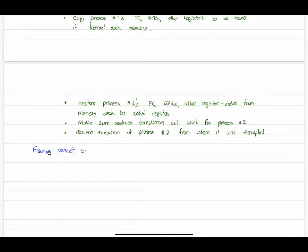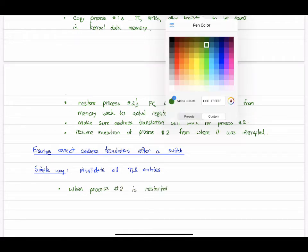Now a little bit more about ensuring address translation works and setup for process number two. As we mentioned, there's a couple ways. Let's look at a simple way first. The idea here is simply to zero out or invalidate all the TLB entries. Those were for process number one, and they won't work at all for process number two, even though they may use some of the same tags. The mapping will be totally different.